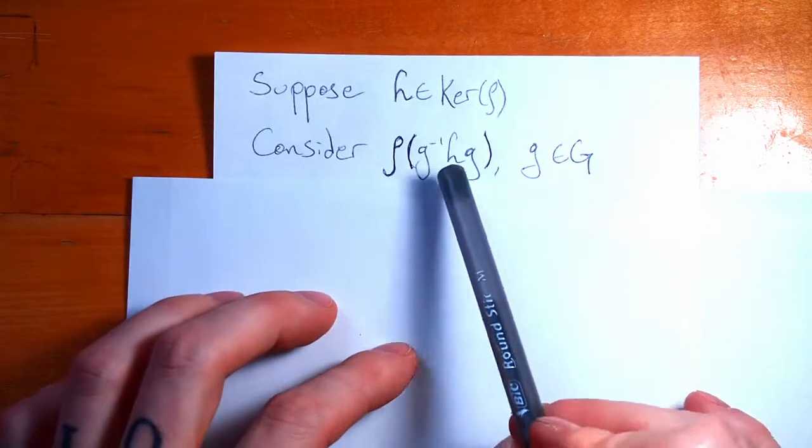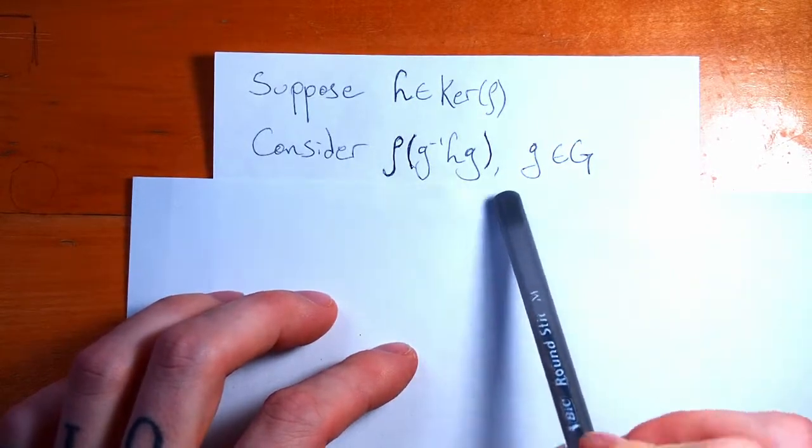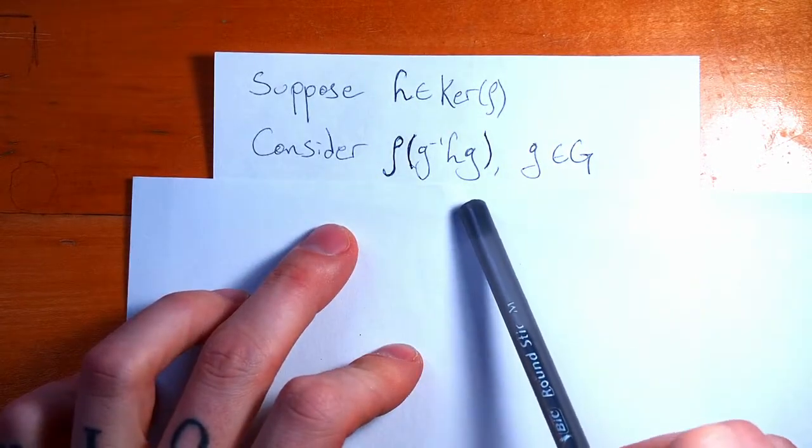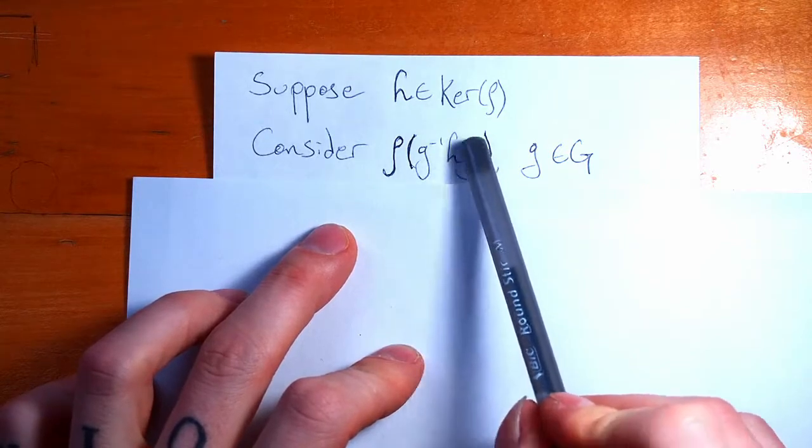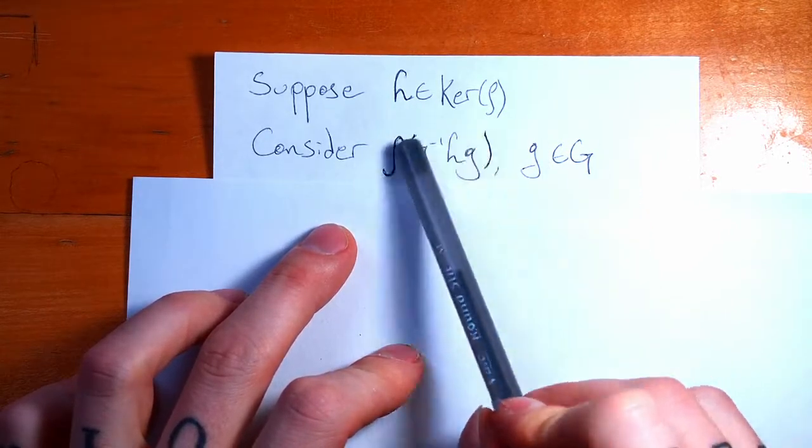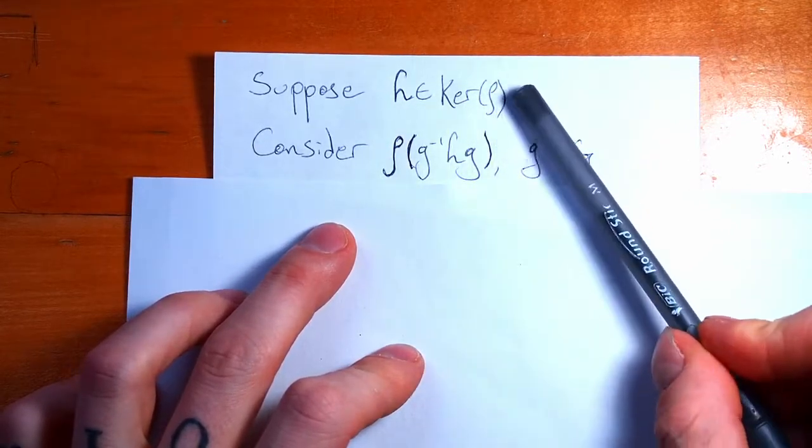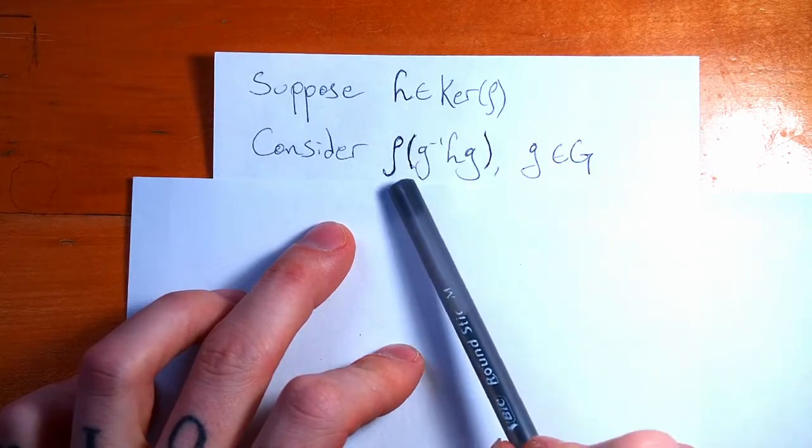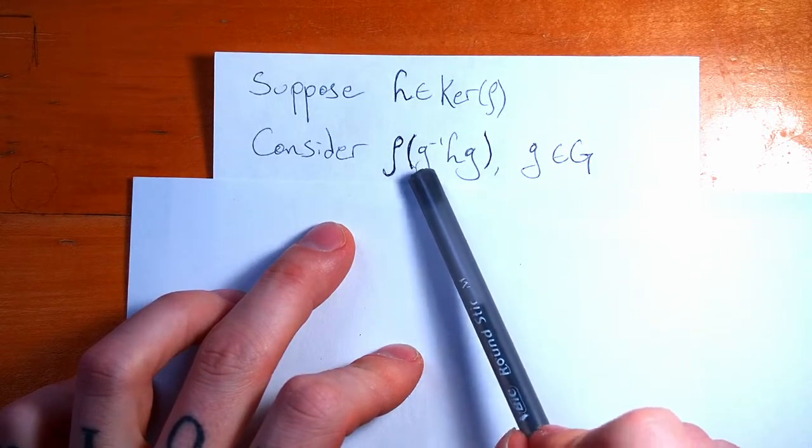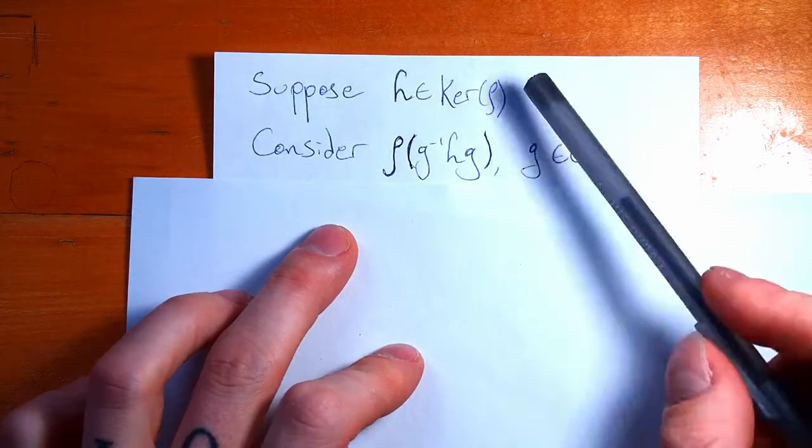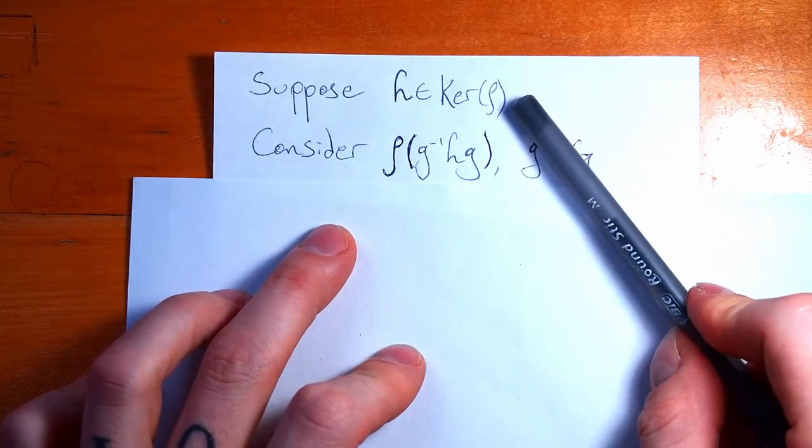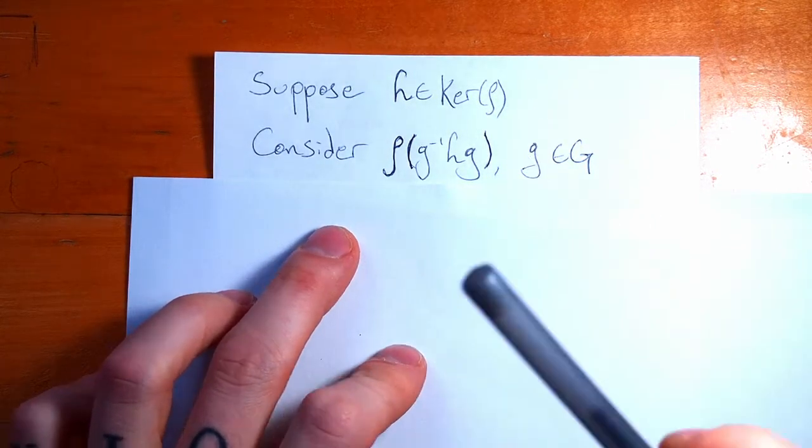And let's consider what happens when we conjugate h, right? A normal subgroup is a subgroup that is invariant under conjugation, right? For all g in our group, if we do this for all h in our subgroup, if this conjugate, this product here of g inverse hg, if that is again in the kernel, then we have that the kernel is invariant under conjugation and is therefore a normal subgroup.